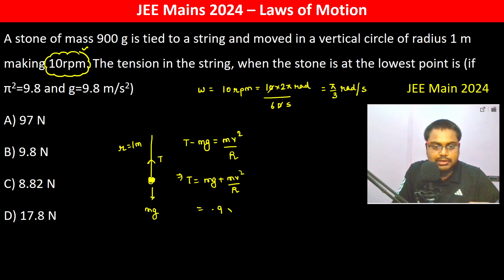Now instead of v² we are writing ω²R. So mg plus m ω² into R. Omega is π by 3, so π² by 9 into the radius which is 1 meter.